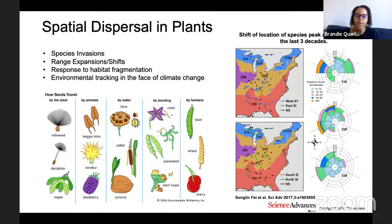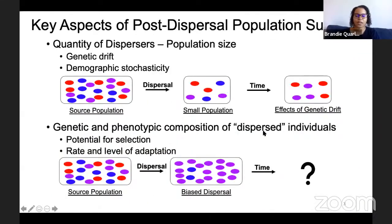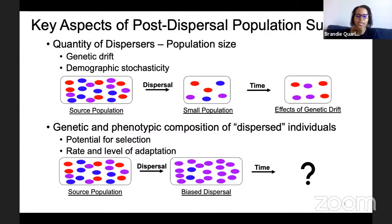Understanding and investigating dispersal is important because it can give us insights into species invasions, range expansions or shifts, response to habitat fragmentation, and environmental tracking in the face of climate change. In fact, as the climates have already started to shift, so have species ranges. Here in this figure on the right, I'm showing how some tree species in North America have already started to shift their peak abundances. But just moving to a new place is not sufficient — you also have to survive and reproduce in the new location.